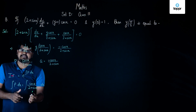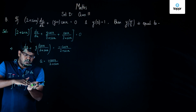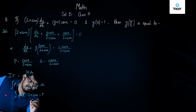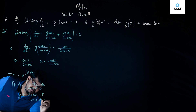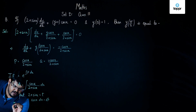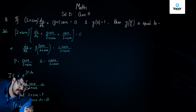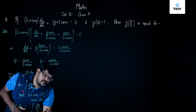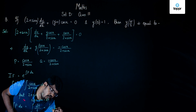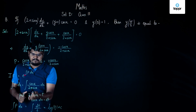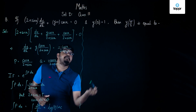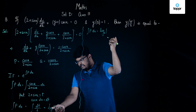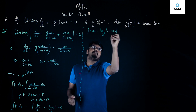We can see that if we substitute the denominator as t, we get its derivative in the numerator. Let 2 + sin x = t, so cos x dx = dt. Thus ∫P dx = ∫cos x/(2 + sin x) dx = ∫dt/t = log|t| + c = log|2 + sin x| + c.